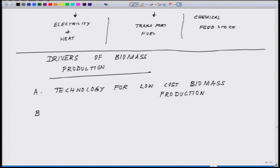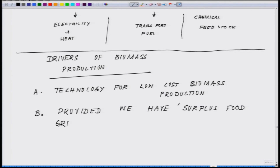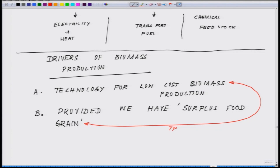The second driver is exactly linked to the previous one: it is provided that we have surplus food grain. This is very critical — we should have surplus food grain so that we can do a trade-off between food and energy. This is the trade-off zone.